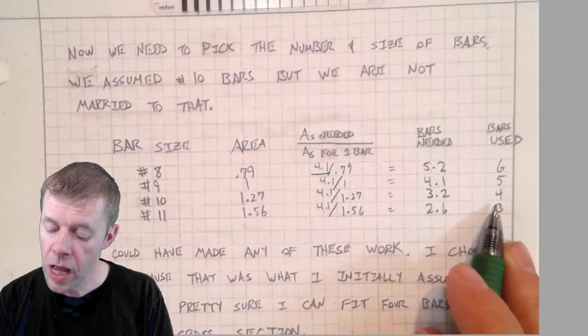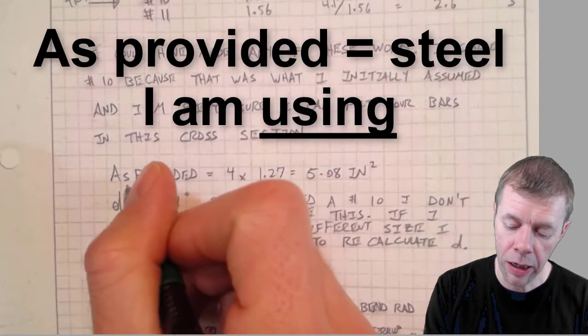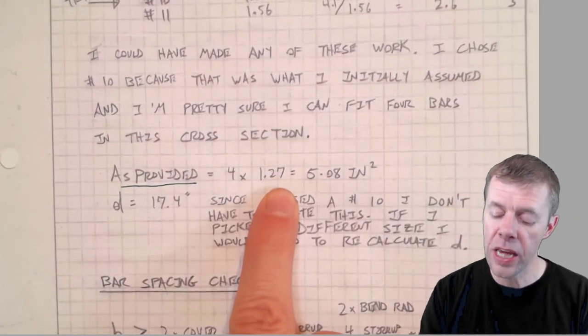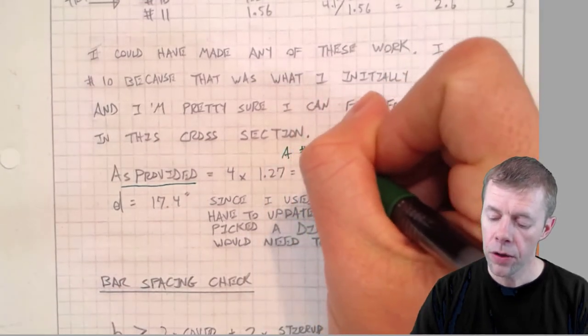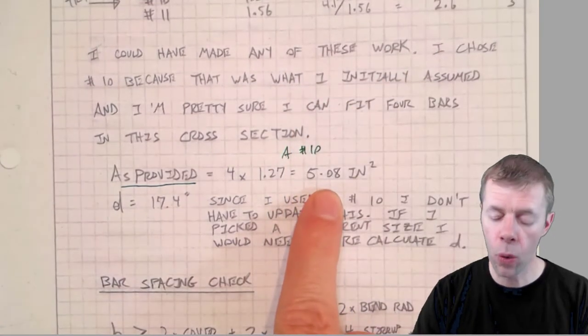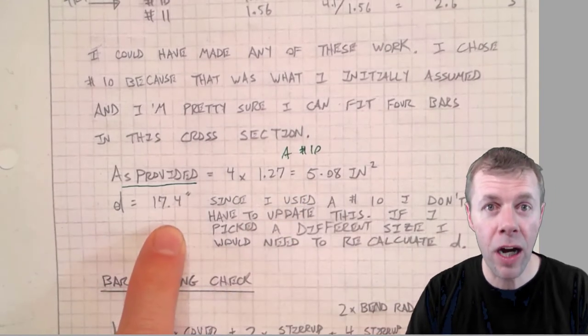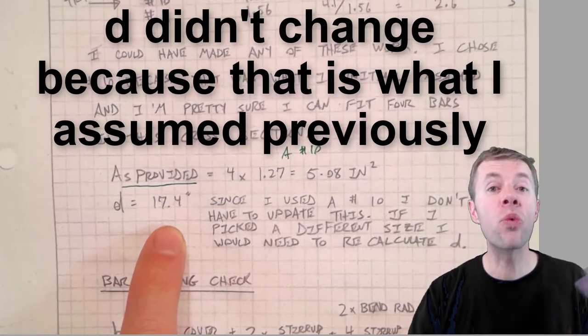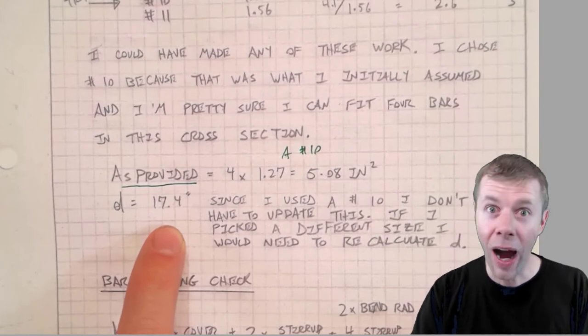As provided, this is what I'm actually providing: four times 1.27, that's the area of a number 10 bar. That's 5.08 inches squared. My d is the same d that I calculated before. I don't have to, if I picked a different bar I'd have to redo the calculation, but I got lucky. So I don't have to update it.